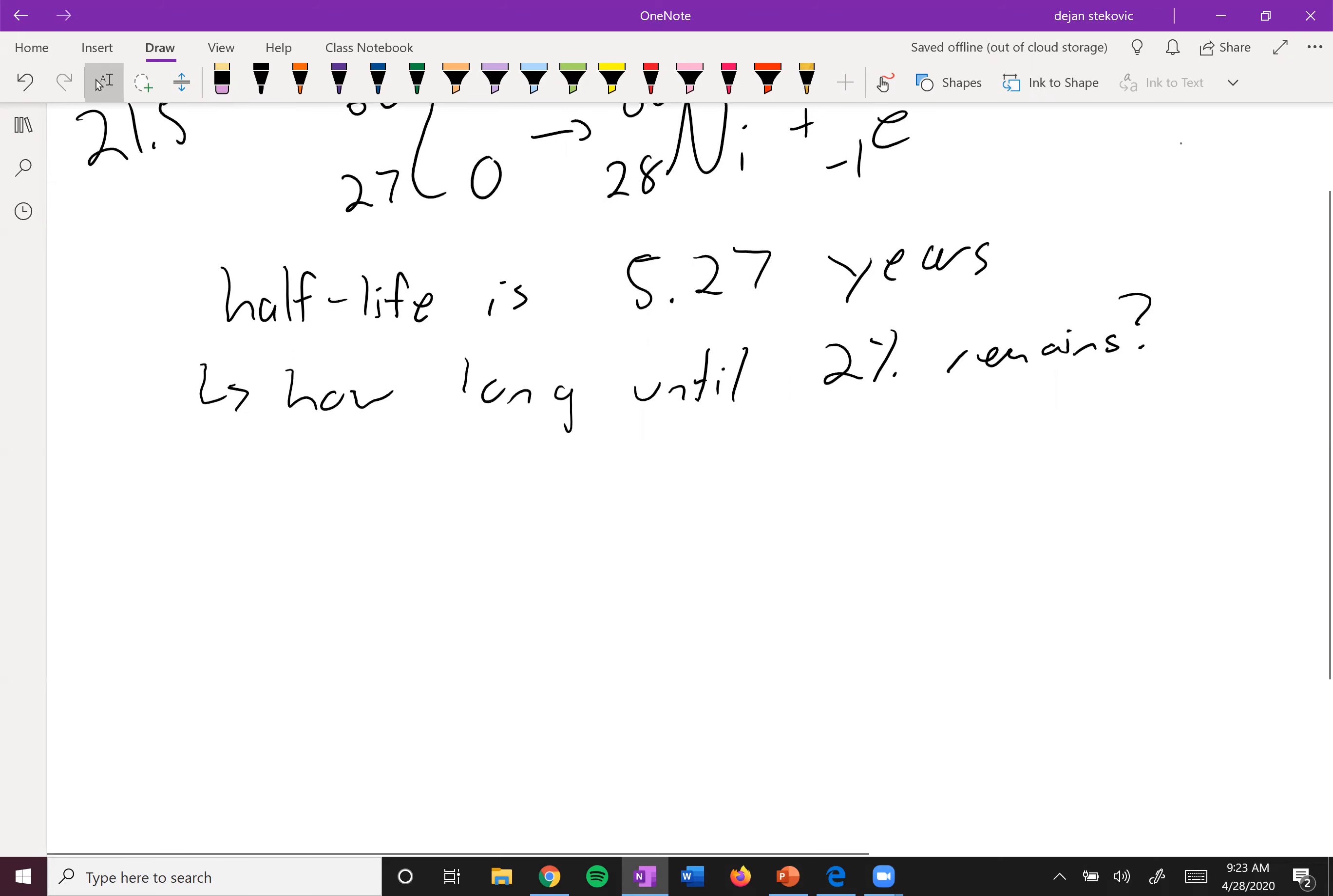There are two main equations you want to use when solving for this. The first is the half-life: t₁/₂ = 0.693/k. The other one is the integrated rate law: ln([A]ₜ/[A]₀) = -kt.